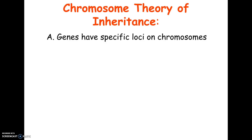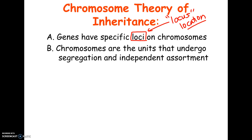First, genes have specific loci on chromosomes. Loci is the plural; locus is the singular, and it literally just means location. So what a gene really is — these letters Mendel was using — are actually just specific spots on chromosomes. The chromosomes are what was undergoing the principle of segregation, and the chromosomes were the things undergoing the principle of independent assortment. This is just applying what Mendel knew to chromosomes.